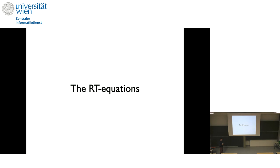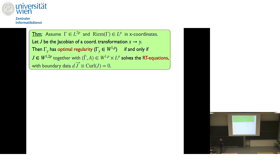Now for the second half: the elliptic equations. All proofs are based on this elliptic equation. The point is that you can map a connection to optimal regularity if and only if the Jacobian that brings you to this coordinate system solves the so-called Regularity Transformation equation — together with some other auxiliary field. This is the elliptic system: the delta operator is a co-derivative based on the Euclidean metric in the fixed X coordinates, and that's the whole trick for bringing ellipticity into the picture.